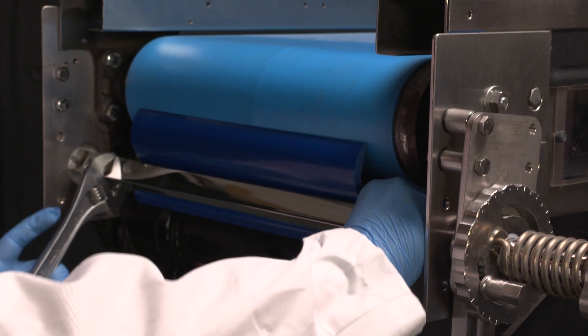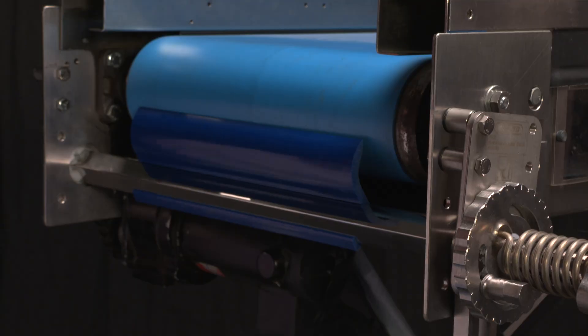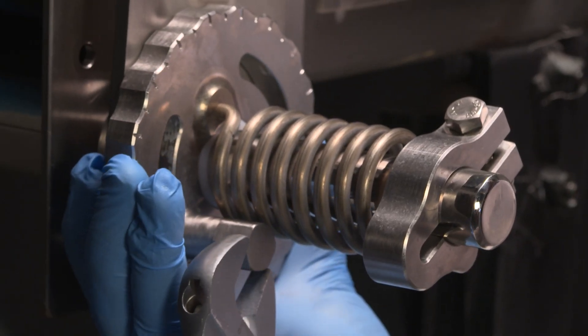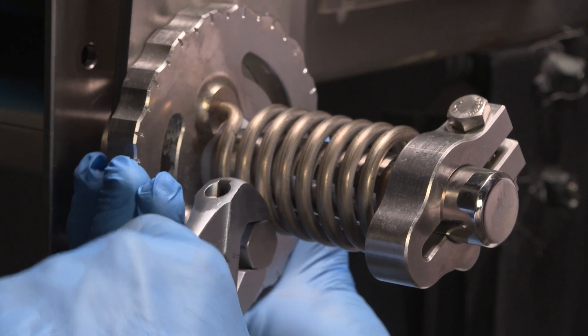With the blade properly adjusted, tension the mechanism by rotating the torsion hub. Tighten the set bolt until it contacts the torsion hub plus one-quarter of a turn.